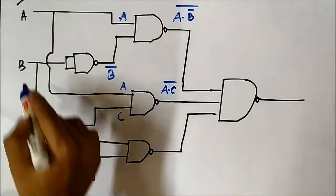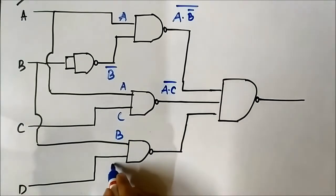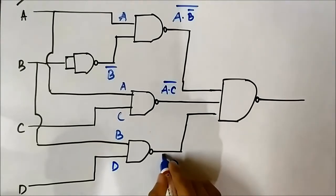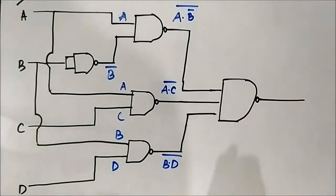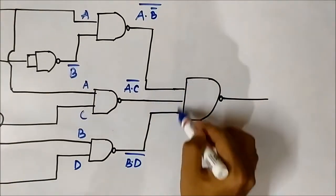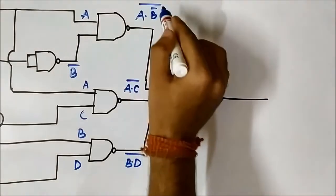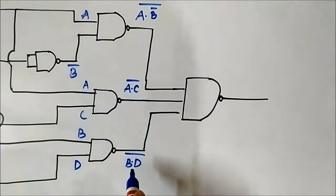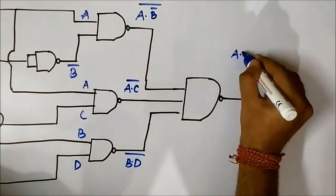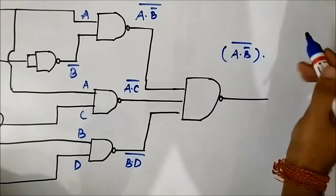The third NAND gate of the second layer has inputs B and D, giving (B · D) whole complement. The three inputs to the final three-input NAND gate are (A · B complement) whole complement, (A · C) whole complement, and (B · D) whole complement. So the output would be [(A · B complement) whole complement · (A · C) whole complement · (B · D) whole complement] whole complement.